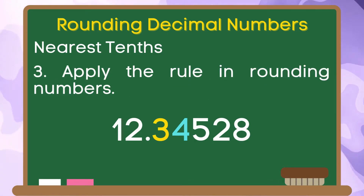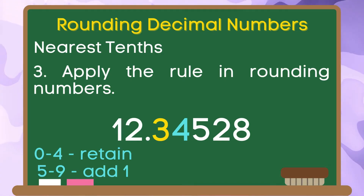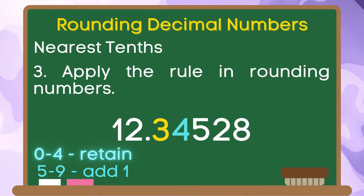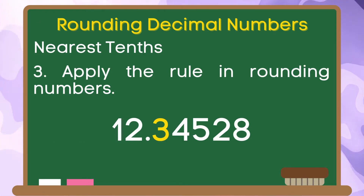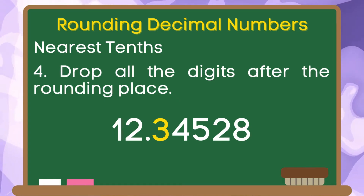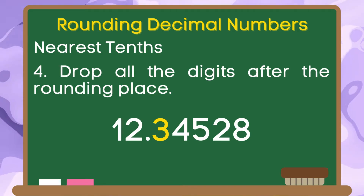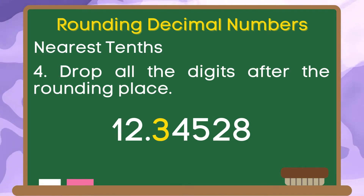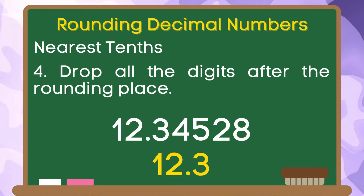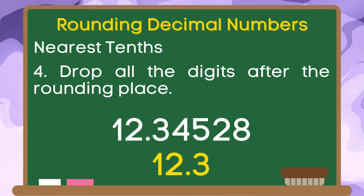Step 3: apply the rule in rounding numbers. Since 4 belongs to the group of 0 to 4, we are going to retain the value of 3 in our number. And for the last step, we are going to drop all the digits after the rounding place. 4, 5, 2, and 8 will be removed from our decimal number. Therefore, the rounded number of 12 and 34 thousand 528 hundred-thousandths is 12 and 3 tenths.